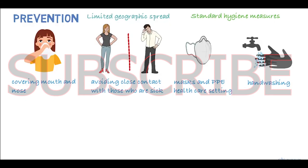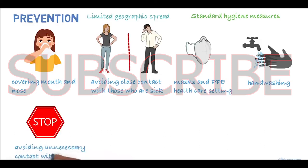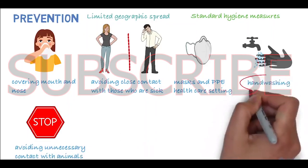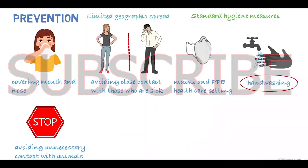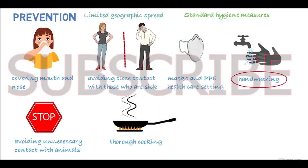Actions that can be taken to prevent infection from an animal source include avoiding unnecessary, unprotected contact with animals, washing hands after contact with animals or animal products, and ensuring that animal products are cooked thoroughly before they're consumed.